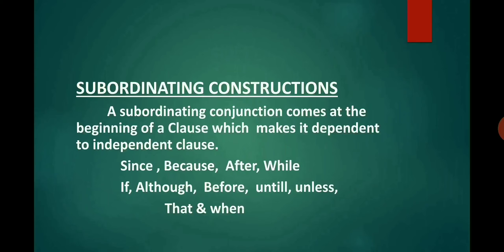The second type of conjunction is subordinating conjunction. A subordinating conjunction comes at the beginning of a clause, making it dependent on an independent clause. There are many subordinating conjunctions in English, but some of the most common are: since, because, after, while, if, although, before, until, unless, that, and when. You can put the dependent clause at the start or at the end of the sentence.